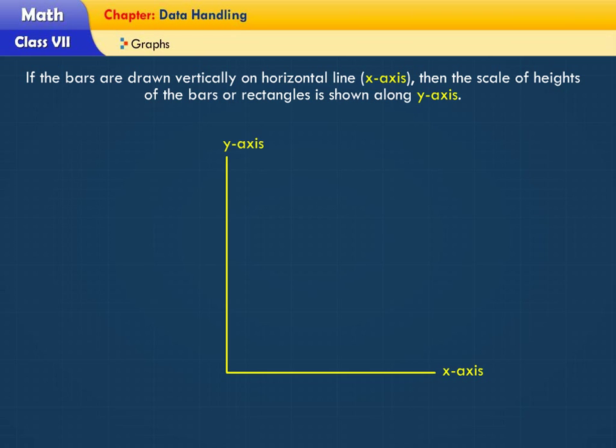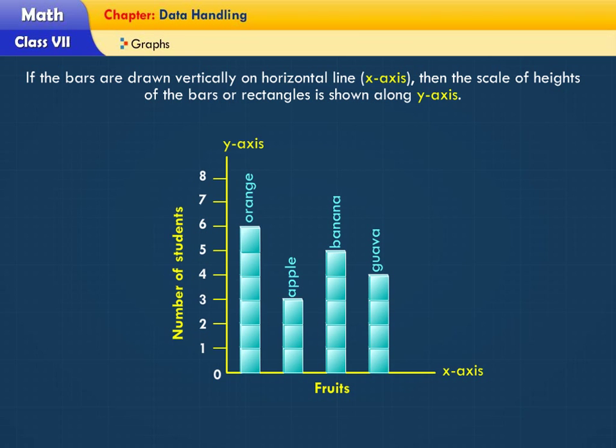If the bars are drawn vertically on the horizontal line x-axis, then the scale of heights of the bars or rectangles is shown along y-axis.